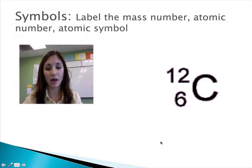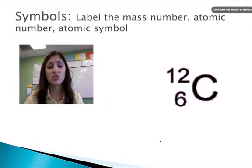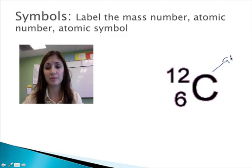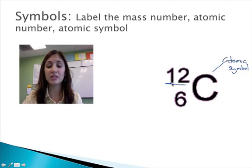Let's take a look at this example right here. So here we have carbon. The C is its atomic symbol. But what do these other numbers mean? Well, the number that's up here in the top left-hand corner, this is the atomic mass of carbon.